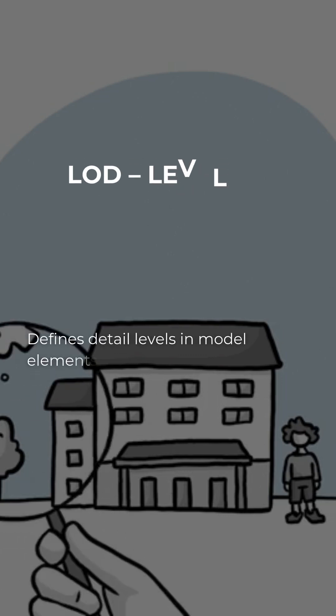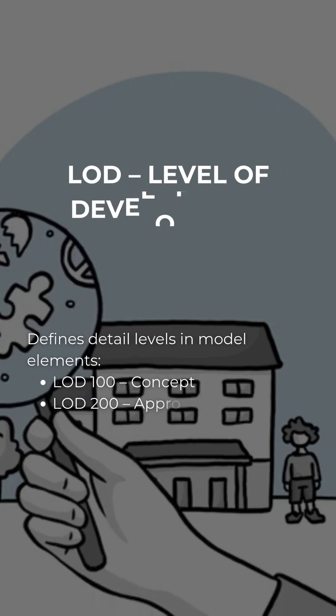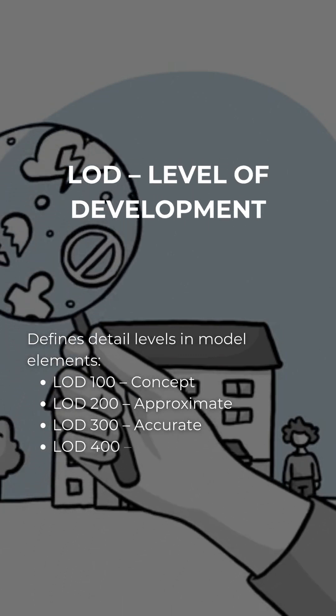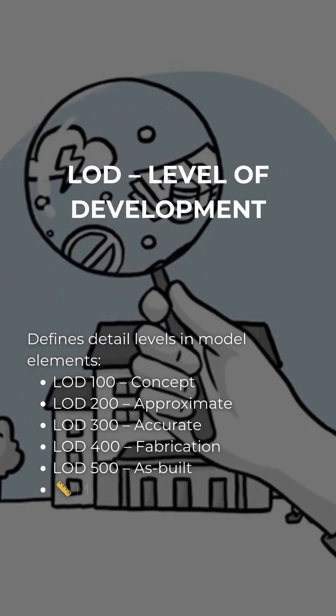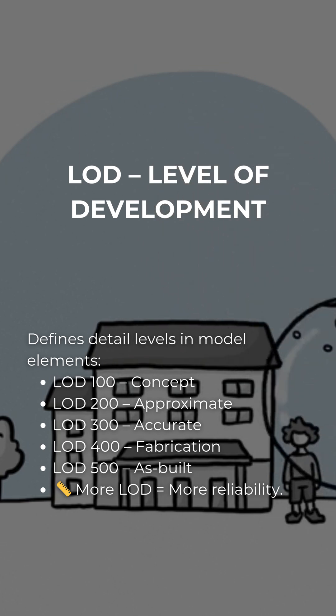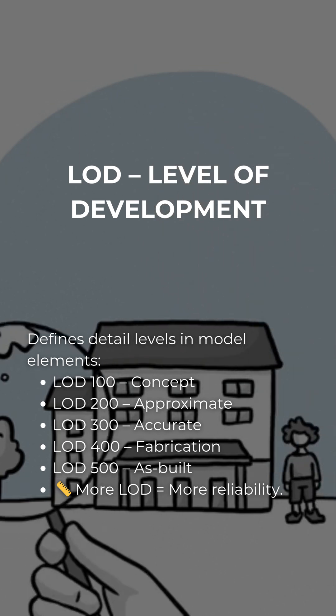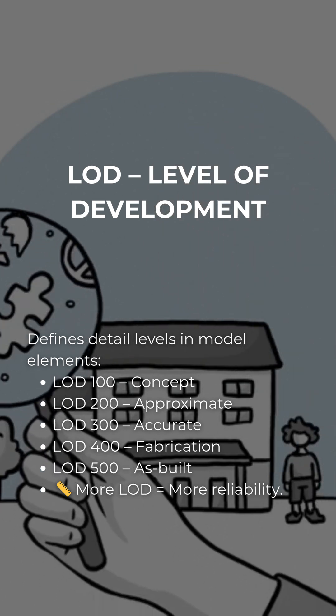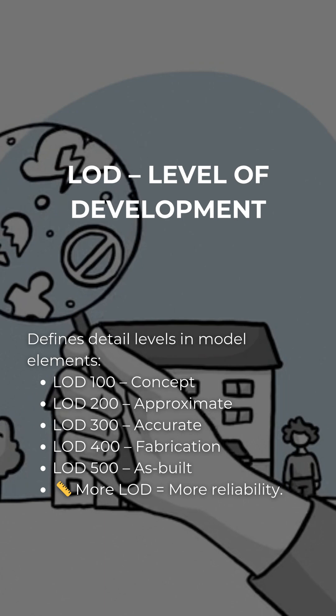Next, we have LOD — Level of Development. This tells us how detailed the BIM model is at any stage, from basic massing at LOD 100, all the way to real-world as-built detail at LOD 500.